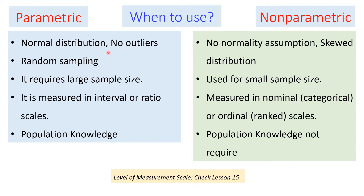The frequency distribution curve should be bell-shaped, with no outliers, and the mean, median, and mode should be equal. If this is satisfied, we check the other assumptions. If the data is not normally distributed or if it is a skewed distribution, we go directly to the non-parametric test.